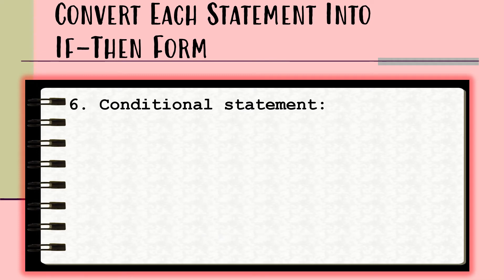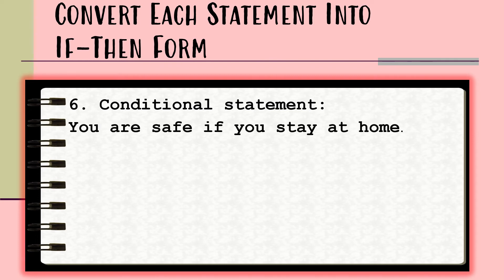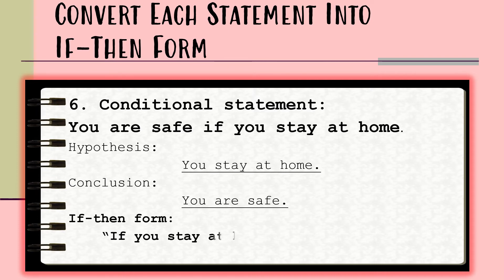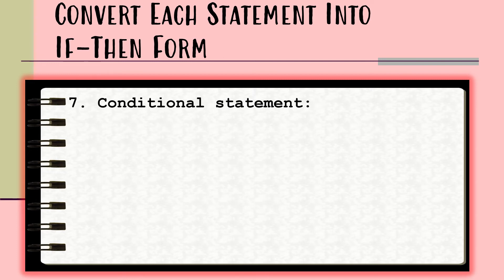For number six, the statement is: 'You are safe if you stay at home.' The hypothesis of this statement is 'you stay at home,' while the conclusion is 'you are safe.' Rewriting this into its if-then form, we have: 'If you stay at home, then you are safe.'